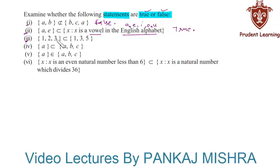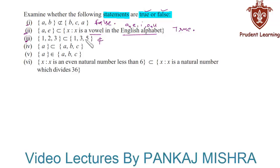In the third section, the first set consists of elements 1, 2, and 3, and the second set contains elements 1, 3, and 5. Since 2 is an element of the first set but is not present in the second set, the first set is not a subset of the second set. Hence the given statement is false.